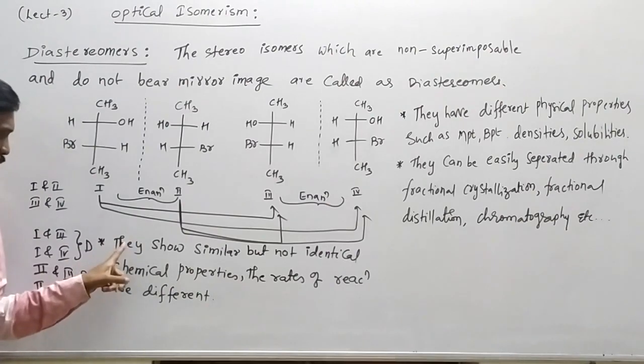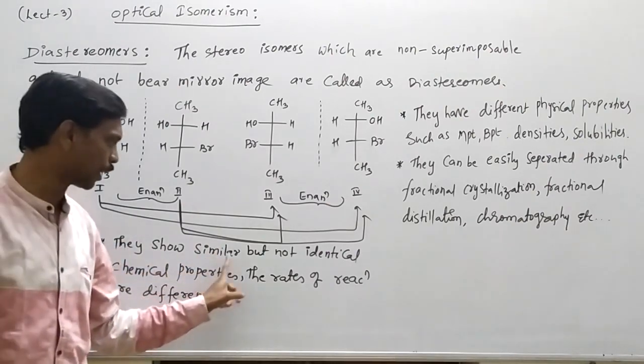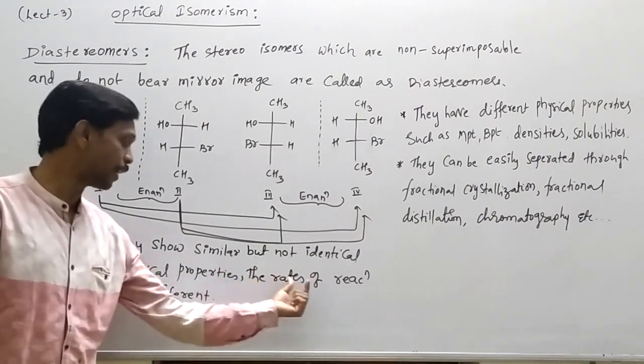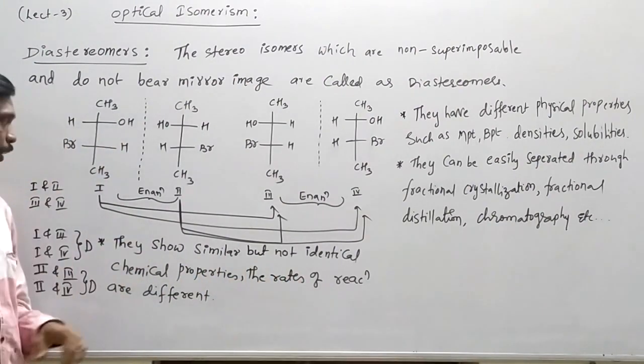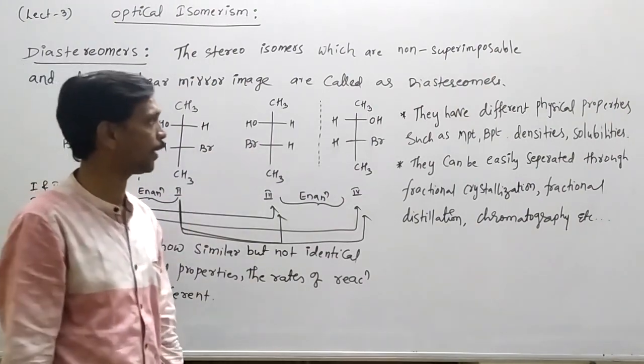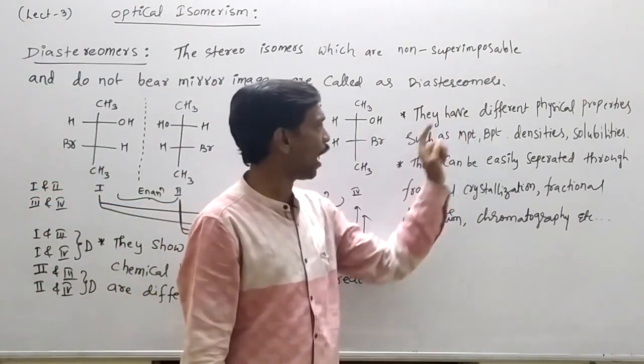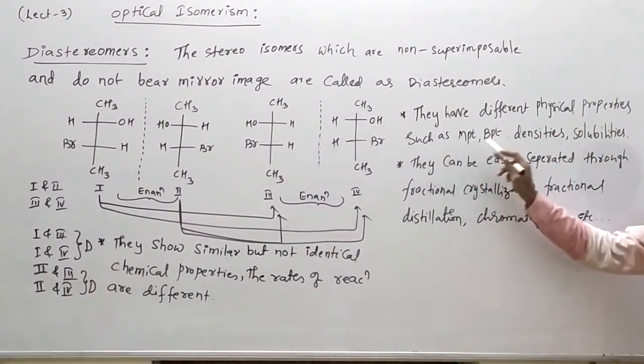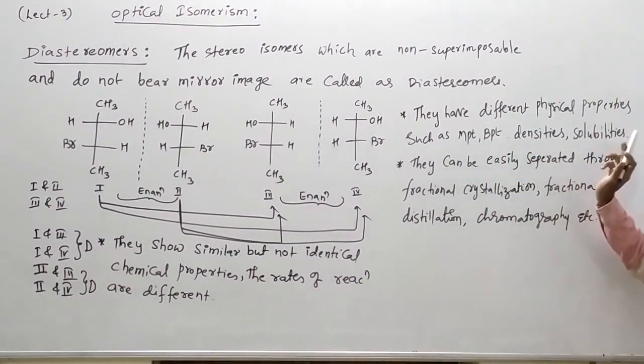They show similar but not identical chemical properties, but the rates of reactions are different. This rate of reaction and this rate of reaction is different. Now they have different physical properties such as melting point, boiling point, density, solubility.